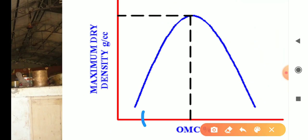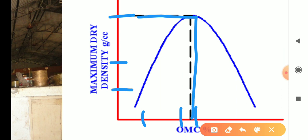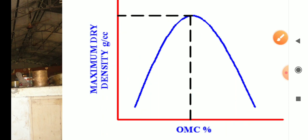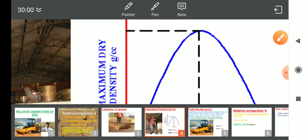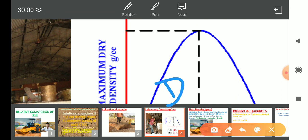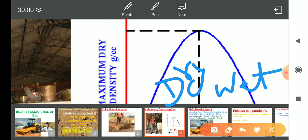For each water content value, a corresponding dry density (MDD) is obtained. The maximum peak of the curve gives the MDD, and the corresponding water content is the OMC. After the peak, the density decreases. The left side of the peak is the dry side and the right side is the wet side.